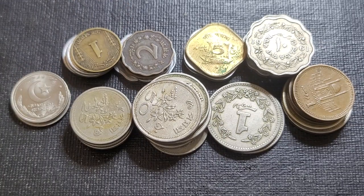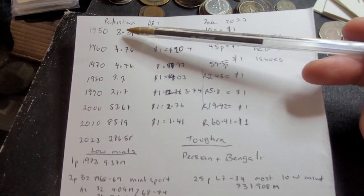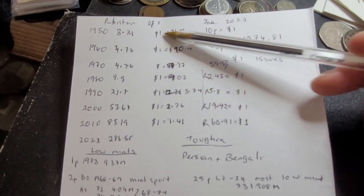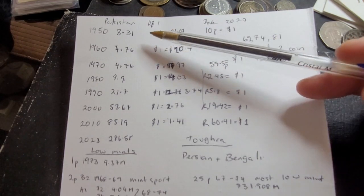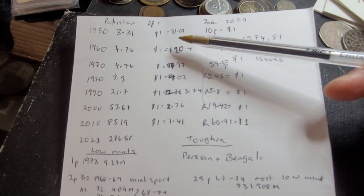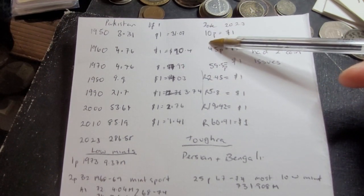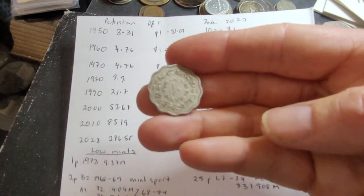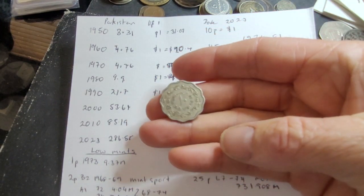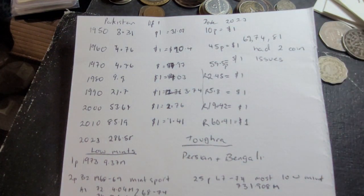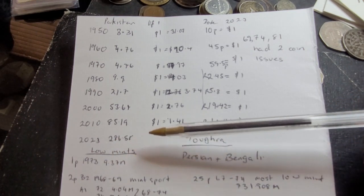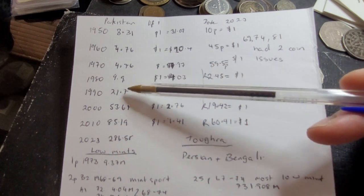Here's some quick information about the exchange rate to the US dollar. In 1950 it was about 3.3 rupees to one US dollar. With US inflation, about one dollar in 1950 is worth 31 dollars now, so really one dollar now could buy 10 paisa. This coin here was equivalent to one dollar now in purchasing power. The current value is 286 rupees to one US dollar.